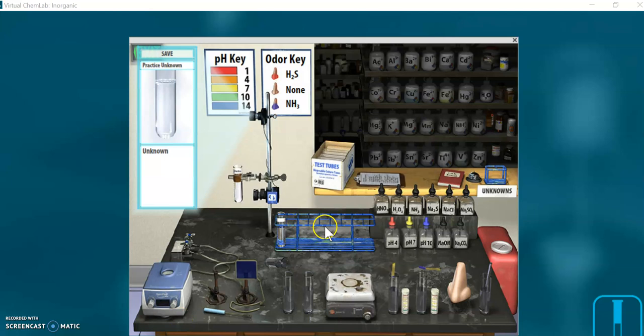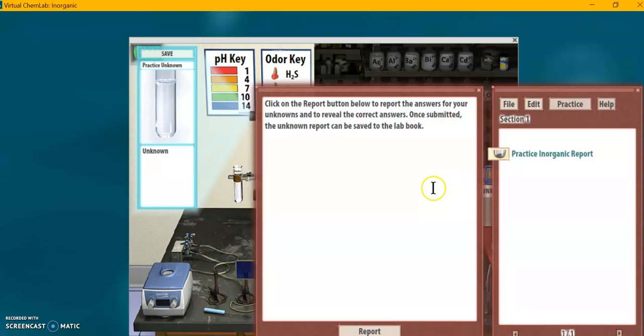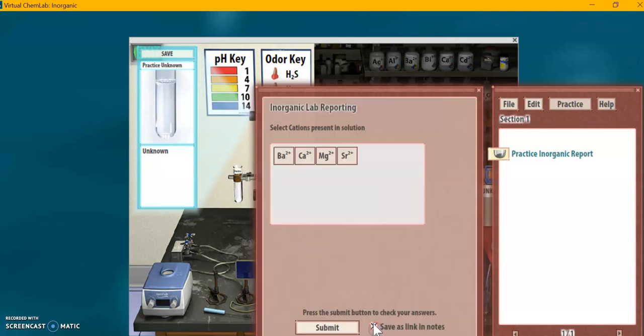When you're done with your qualitative tests, check your results. On the worksheet, it says to click the lab book. And on the left page, click the report button right down there. And we have some options here.